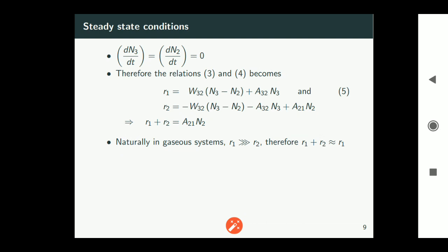Now naturally in gaseous system r1 is much much much higher than r2. That means pumping rate to upper level is much higher than pumping level to next higher level to ground state r2. Therefore we can write r1 plus r2 is nearly equal to r1 itself.